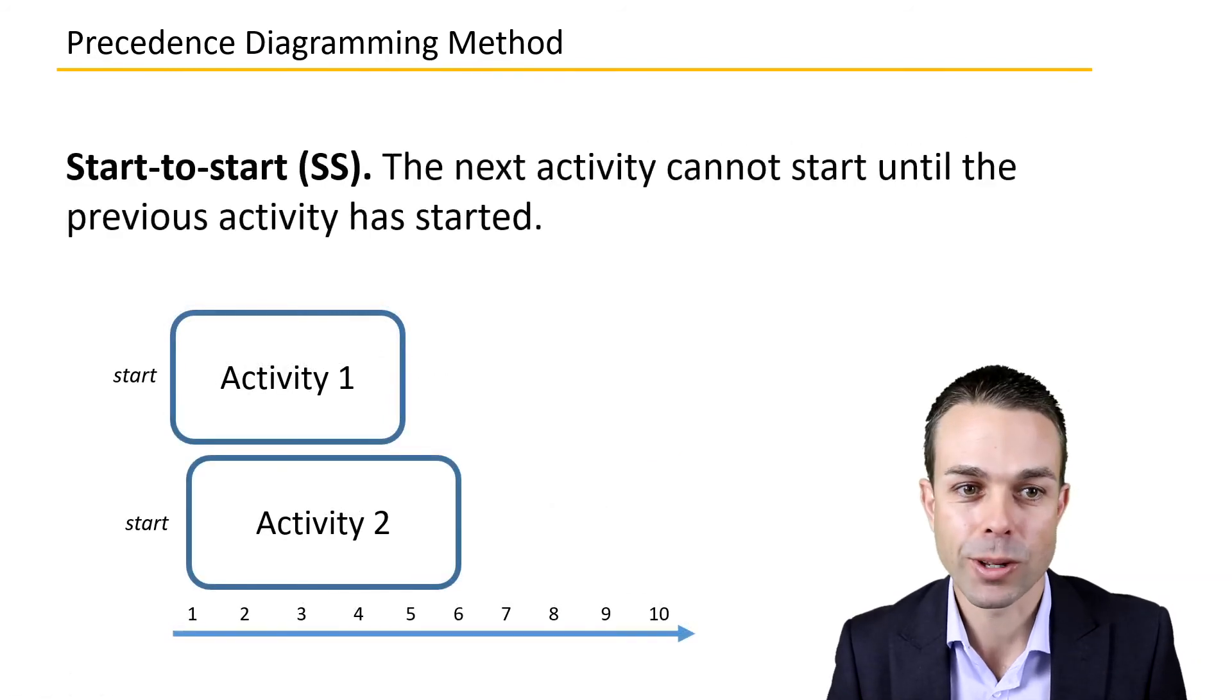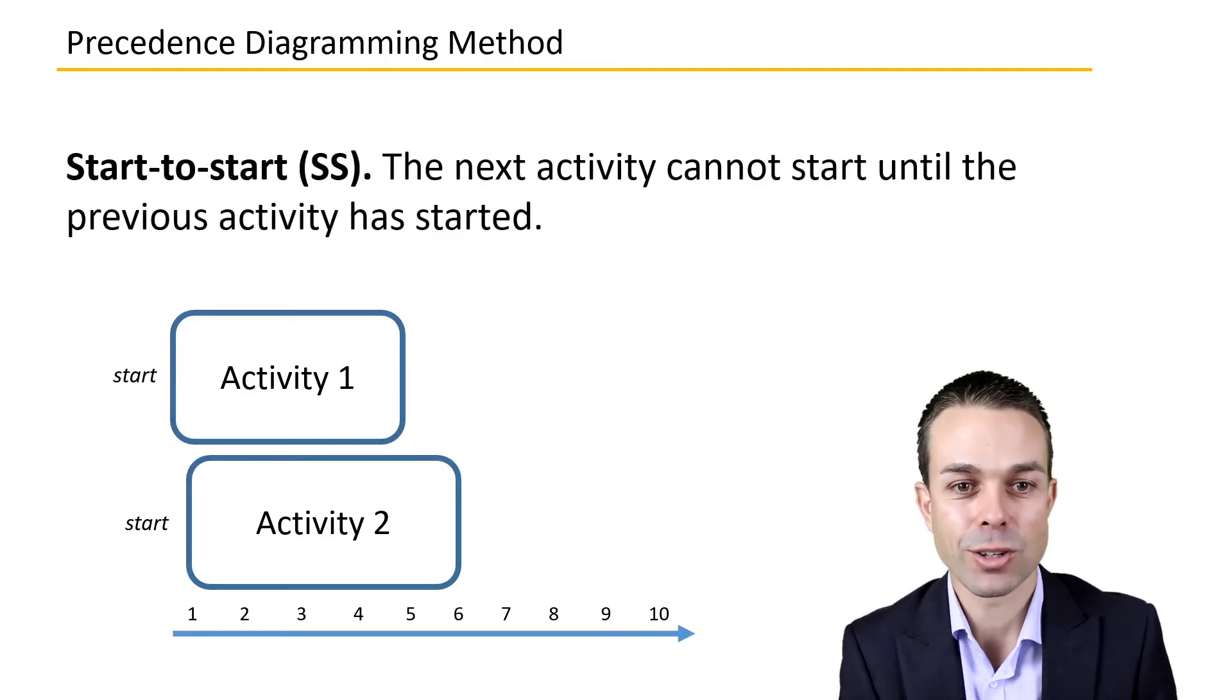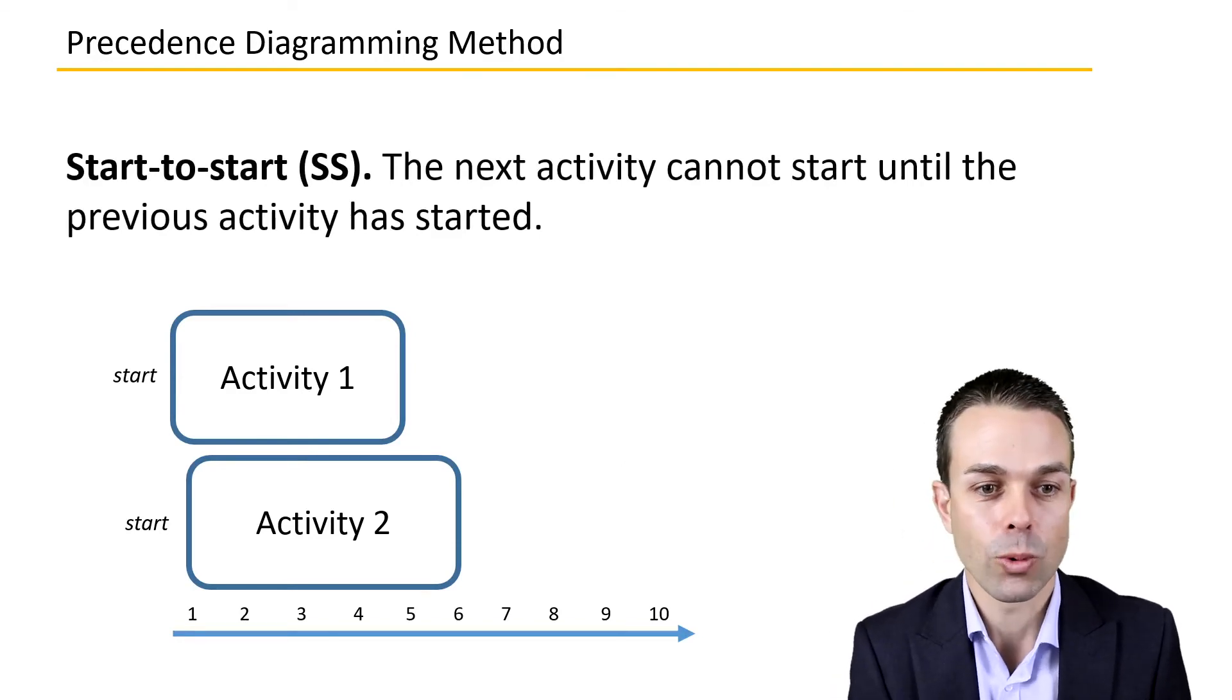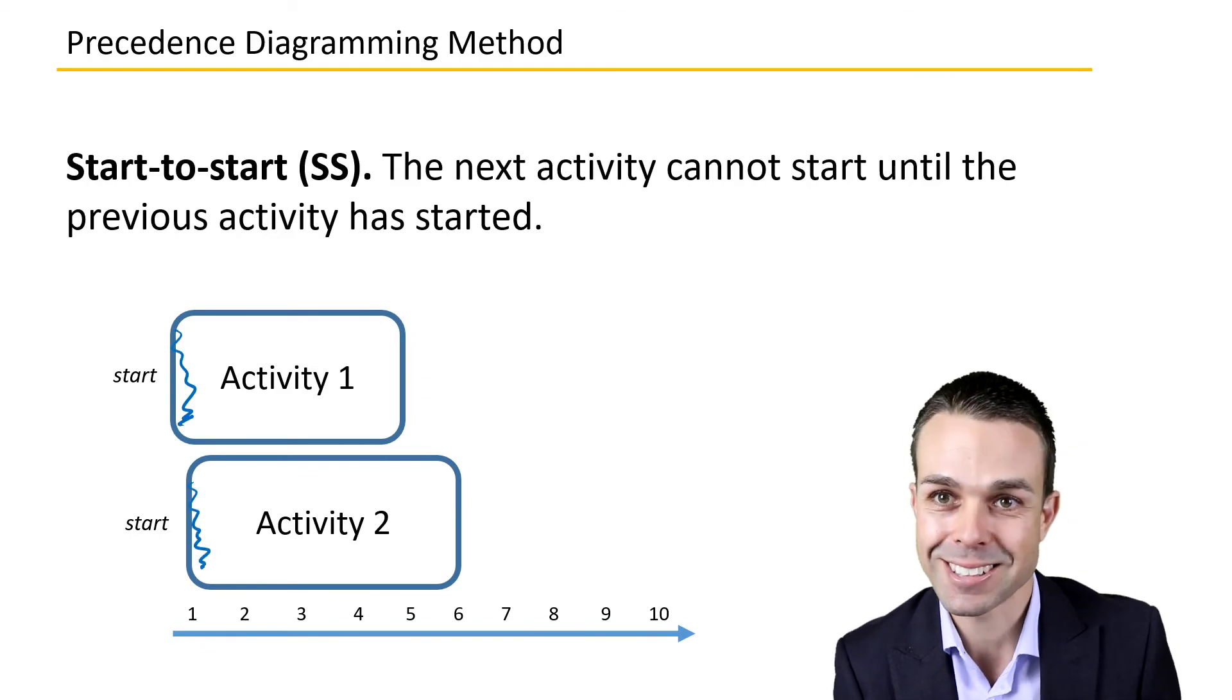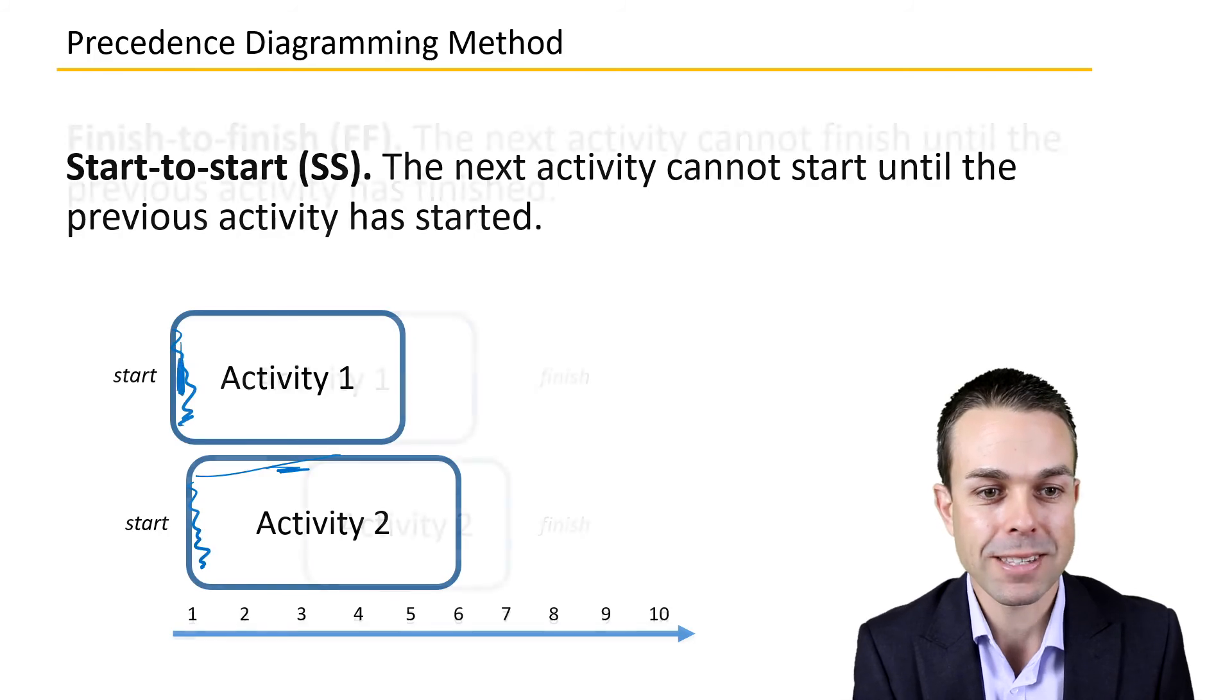The next one is start-to-start, where the next activity cannot start until the previous activity has started. We need the first activity to start before we can have our second start, so this activity is dependent on the first activity starting.